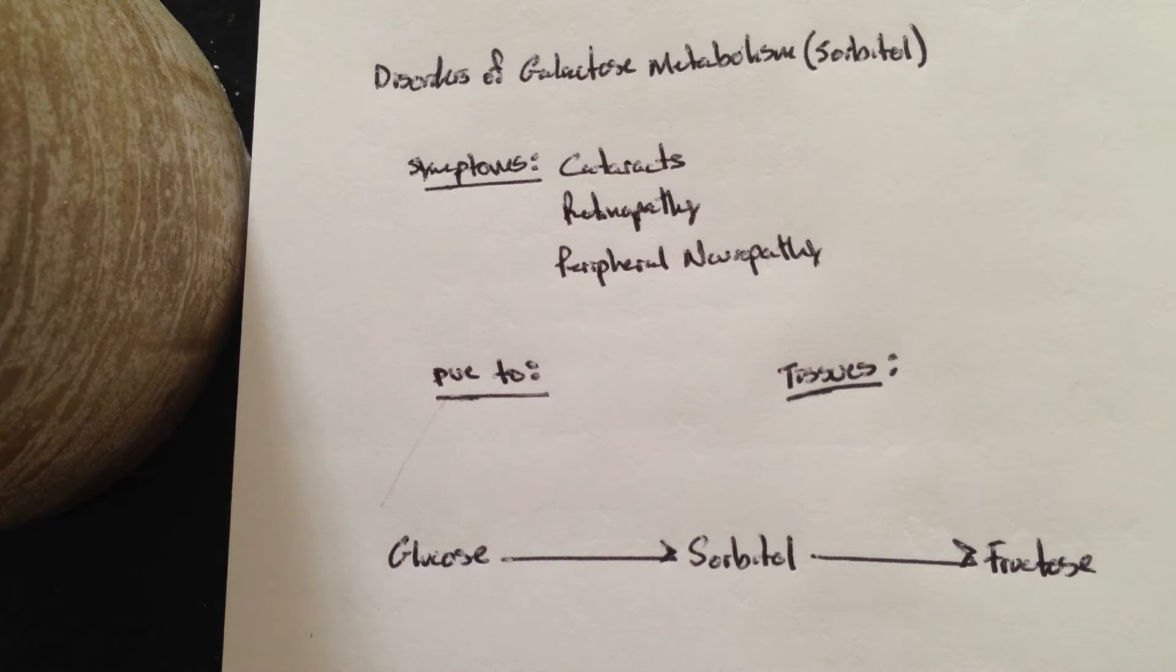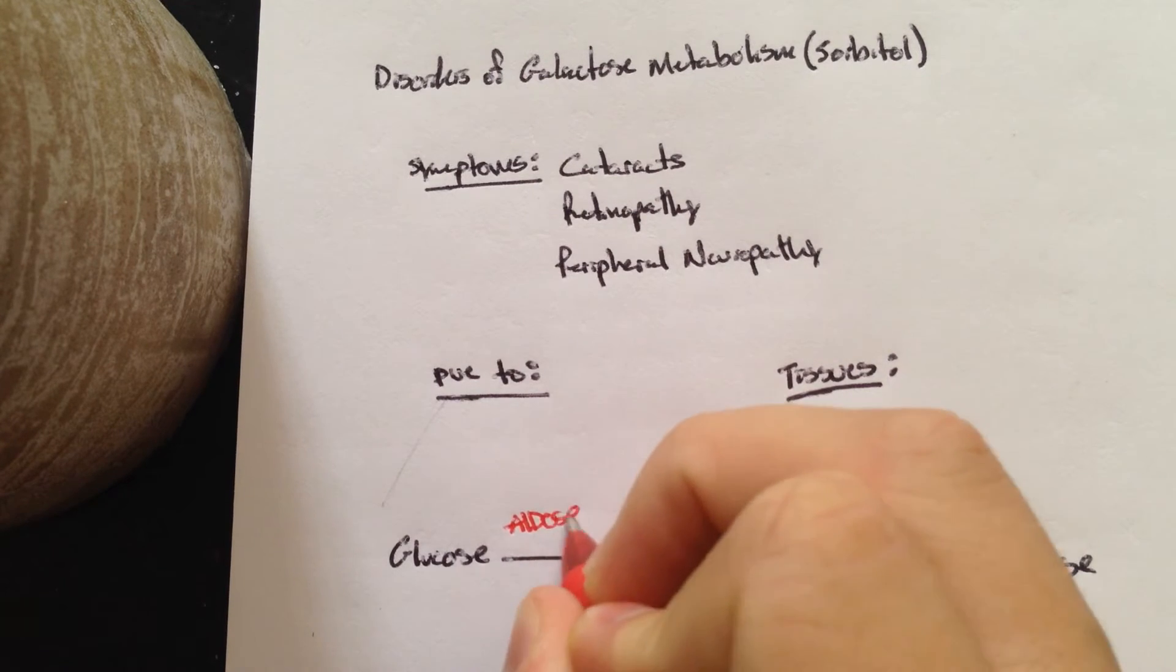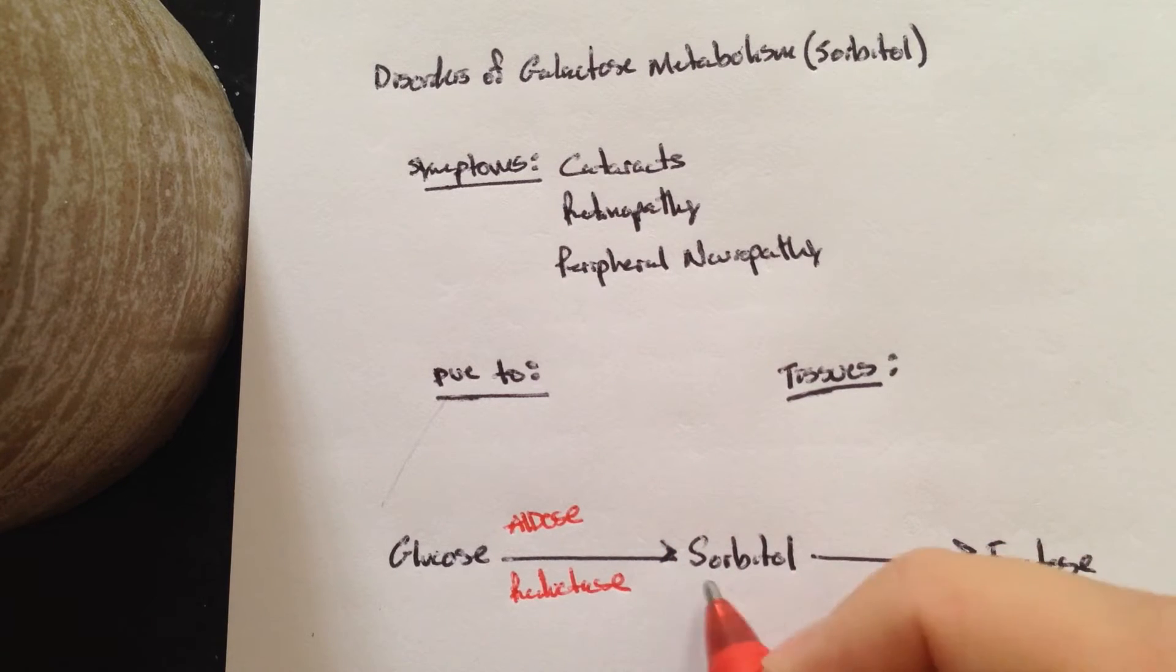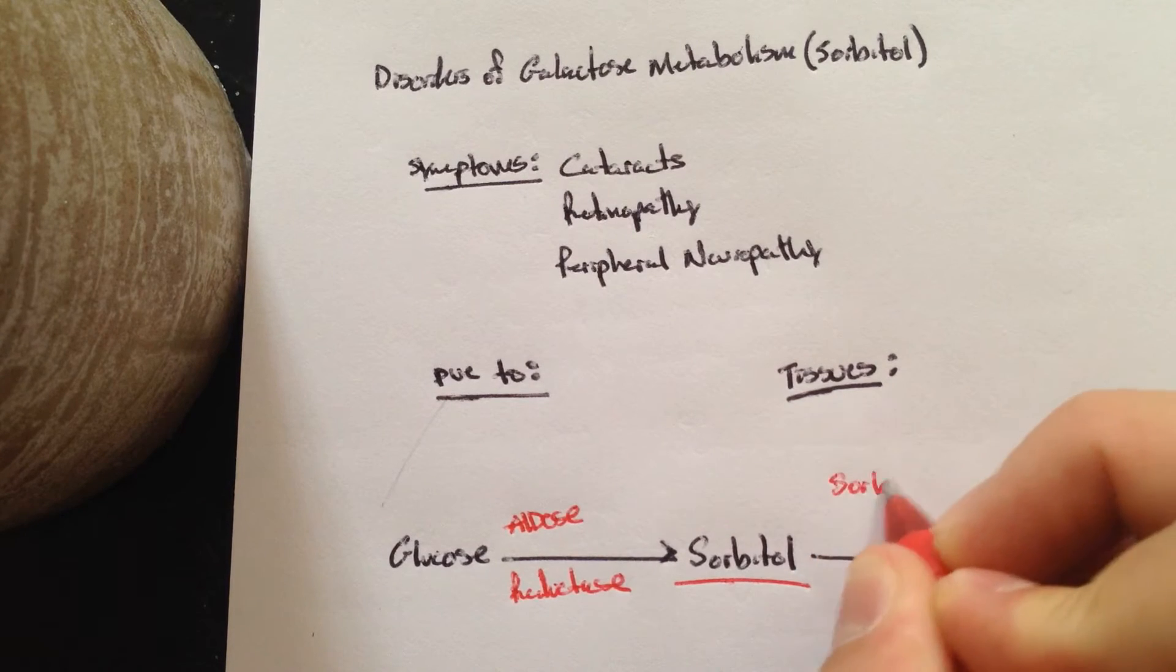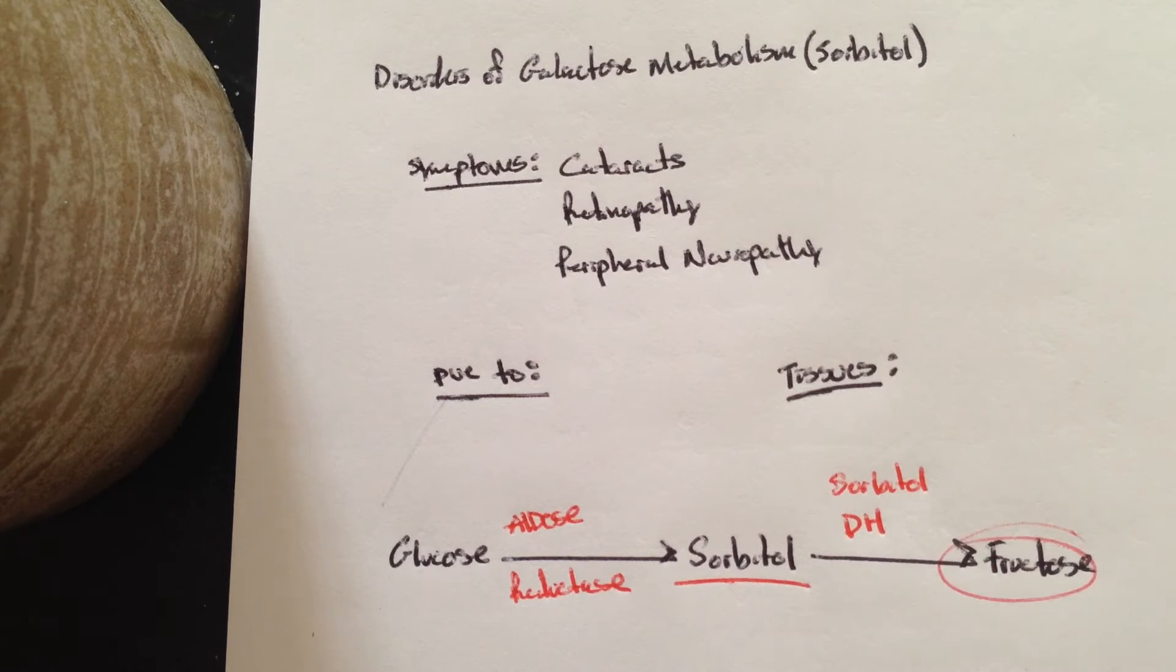So what happens is you have an increase of glucose, which gets turned into sorbitol by aldose reductase. Sorbitol then encounters a second enzyme called sorbitol dehydrogenase, and that's turned into fructose.